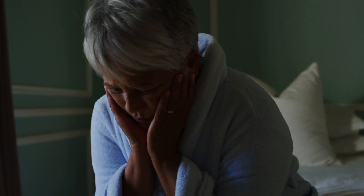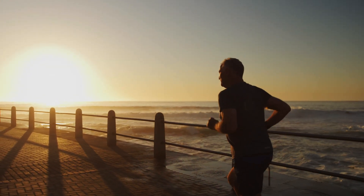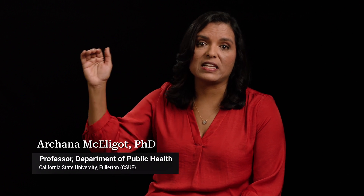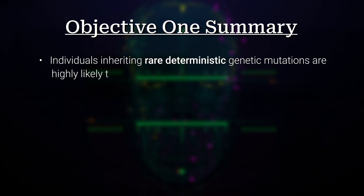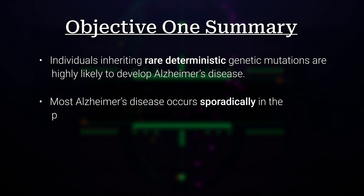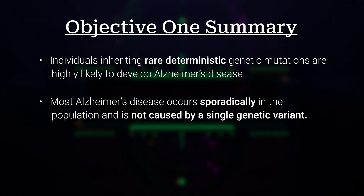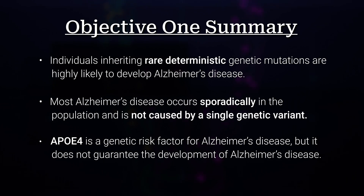While many factors are associated with Alzheimer's disease risk, the greatest risk factor is older age. This risk increases substantially after the age of 50, 60, 70, and 80. Individuals inheriting rare deterministic genetic mutations are highly likely to develop Alzheimer's disease, but most Alzheimer's disease occurs sporadically and is not caused by a single genetic variant. ApoE4 is a genetic risk factor but does not guarantee the development of Alzheimer's disease.